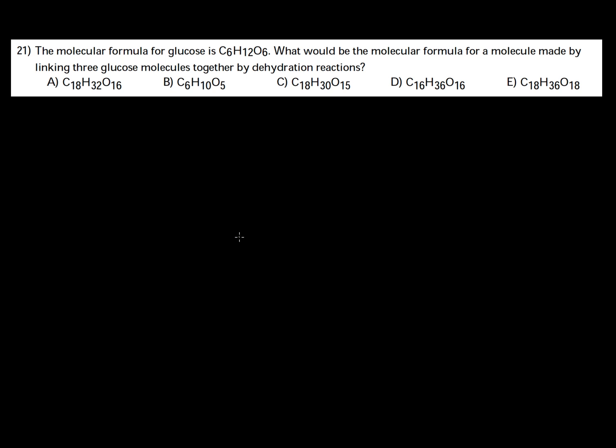Number 21. The molecular formula for glucose is C6H12O6. What would be the molecular formula for a molecule made by linking three glucose molecules together by dehydration reactions?